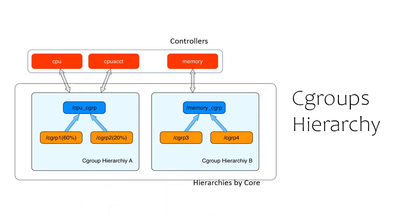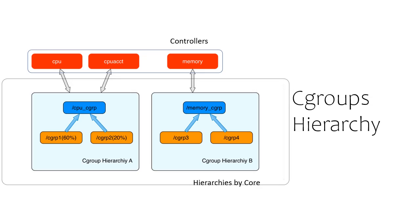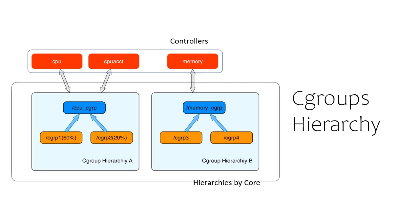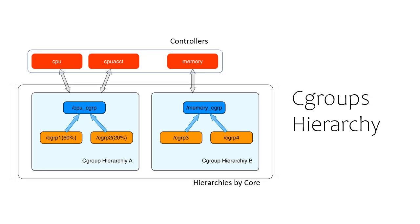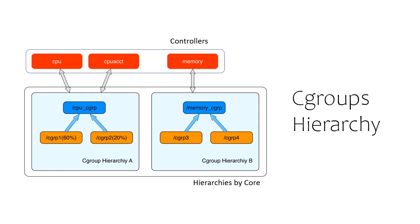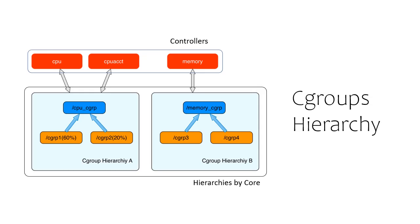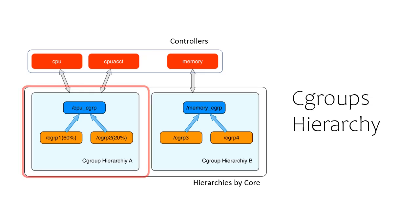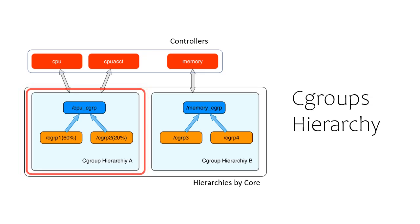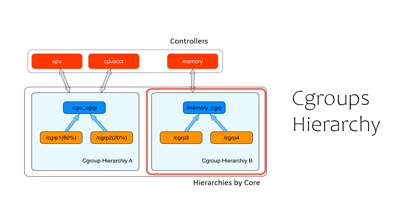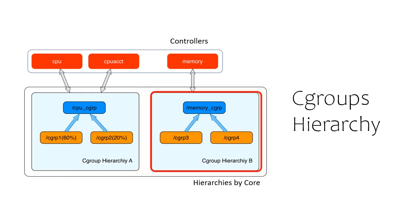Multiple independent hierarchies of cgroups are possible because each hierarchy is attached to one or more cgroup subsystems or controllers. A controller represents a single resource, such as CPU time, CPU set, or memory. In this example, you can see multiple hierarchies: the CPU cgroup hierarchy attached to the controllers CPU and CPU_ACCT, and the memory cgroup is attached to the controller memory.